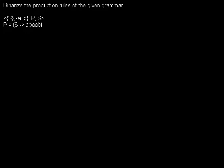I'd like to show you how to binarize the production rules of a grammar in order to produce a Chomsky normal form.